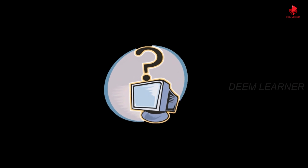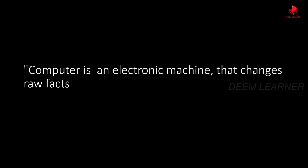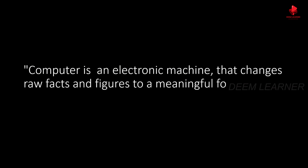You must have wondered: why does the computer understand the language of ones and zeros? Why doesn't it understand our language? For that, you'll need a sneak peek at what a computer is. A computer is an electronic machine that changes raw facts and figures to a meaningful form. For those who still do not know what a computer is, I've briefly explained it in another video — link is in the description.